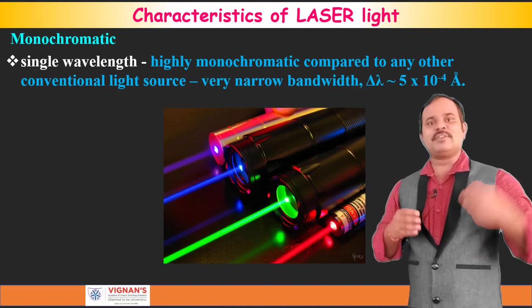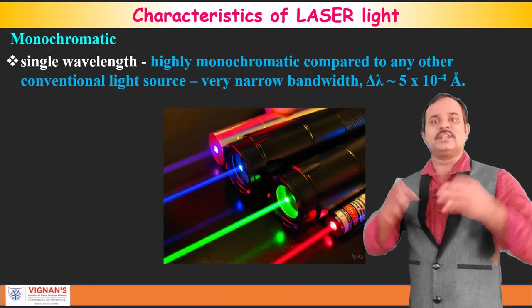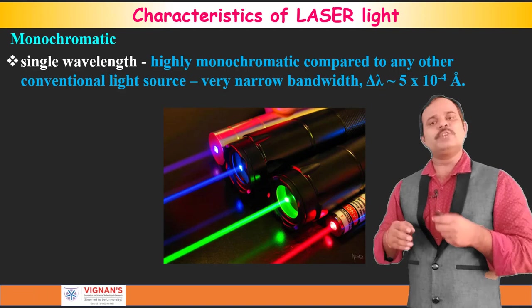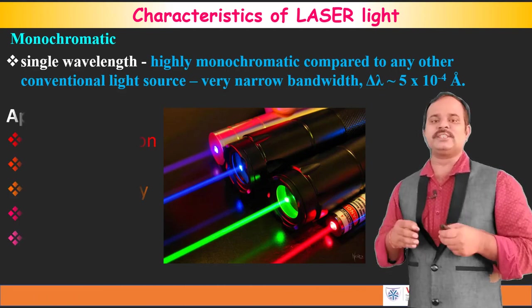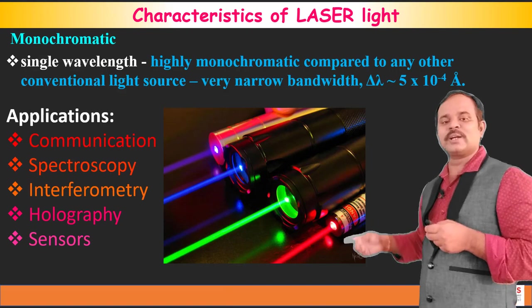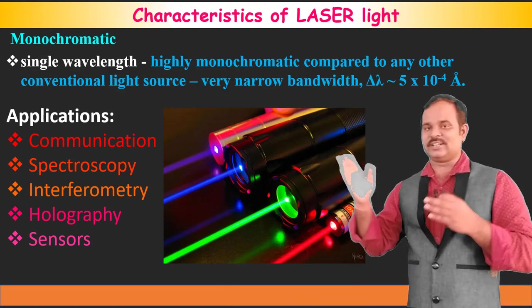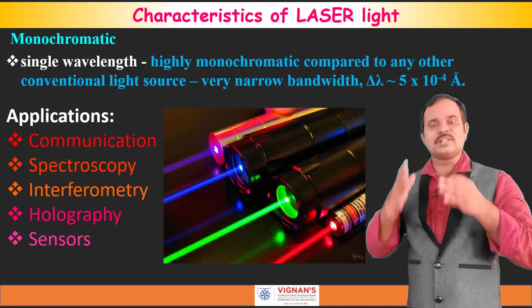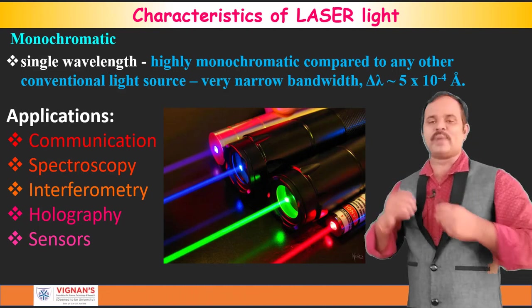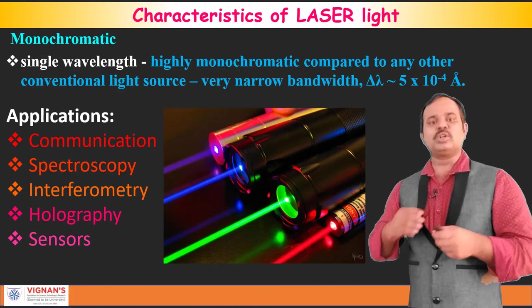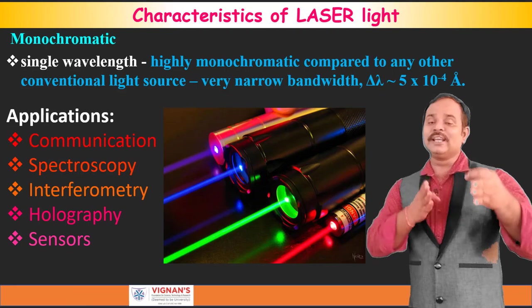Whereas in the case of ordinary light, the light which is emitting is not monochromatic. If you have a monochromatic light, then we can use this in various applications like communication, spectroscopy, interferometry, holography, sensors, etc. These are all applications where the light source requires monochromaticity. Simply, we can say that monochromaticity means single wavelength.